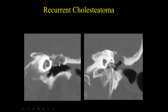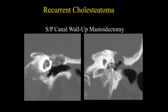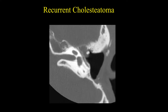Here's another example — a patient with cholesteatoma involving the superior aspect of the middle ear cavity in the epitympanum. And here's another example of recurrent cholesteatoma with thinning of the roof of the tegmen tympani. These are two examples of recurrent cholesteatoma in a patient status post canal wall up mastoidectomy.